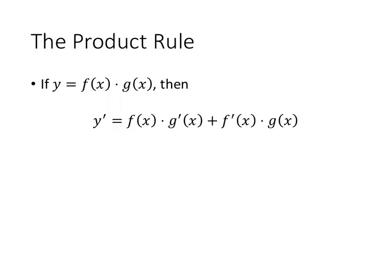If we have a product of two functions, we might hope that the derivative is simply the product of the derivatives, but that's not the case. If y equals f of x times g of x, then we take the first function times the derivative of the second plus the derivative of the first times the second.